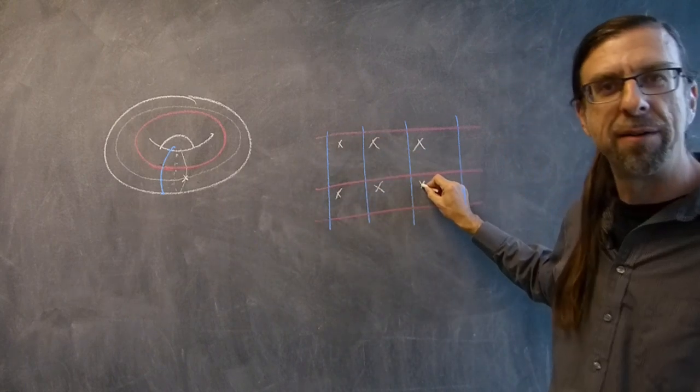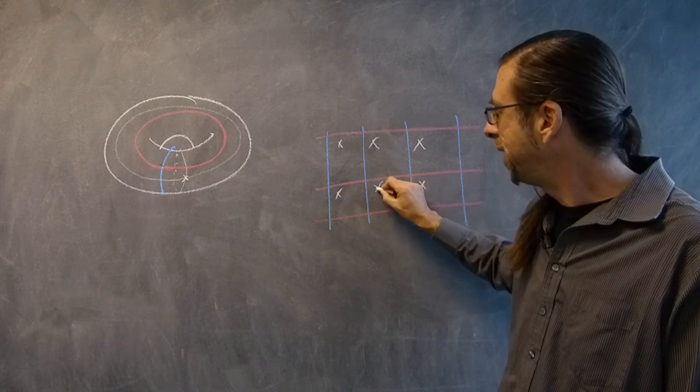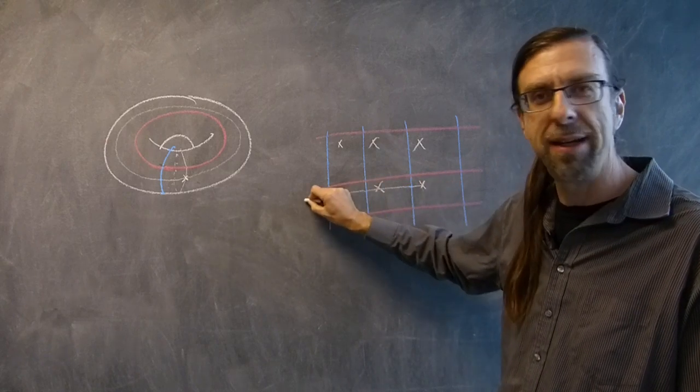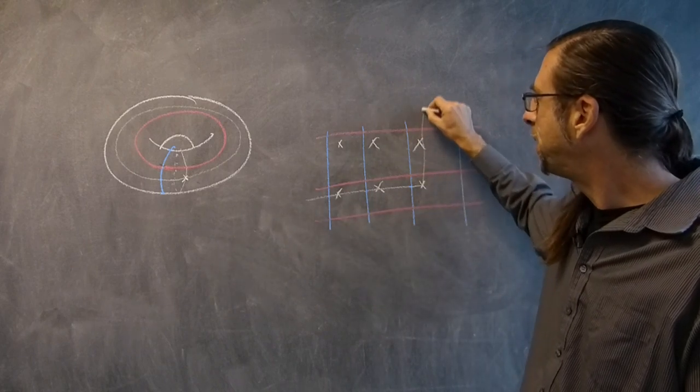If we're here and we look in one direction, we'll see a blue line and then the back of our head, and a blue line and the back of our head, etc. If we look in the other direction, we'll see red lines and other copies of ourselves.